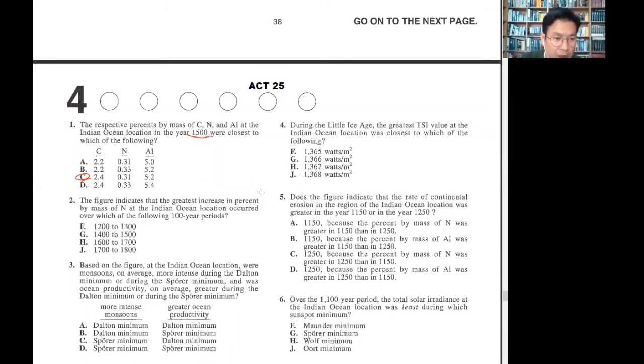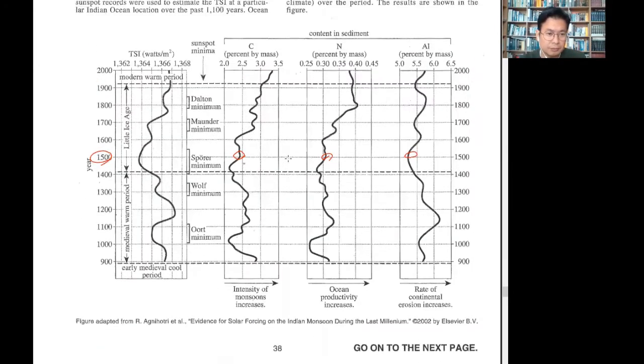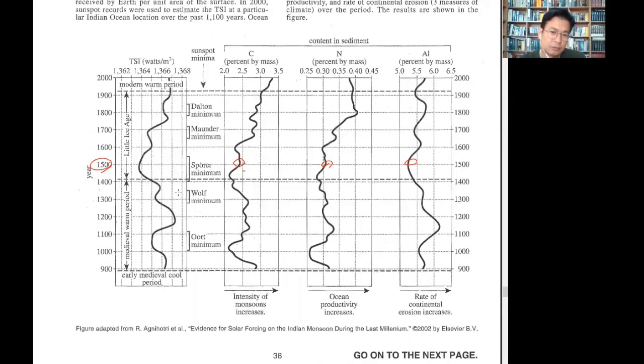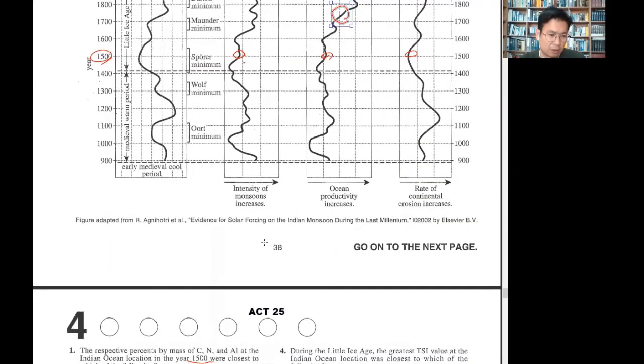The figure indicates that the greatest increase in percent by mass in the Indian Ocean location curve occurred during which period. Which one increased the most? That's here, right? So I'll say this area, 17 to 18, I guess.